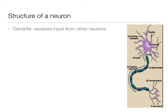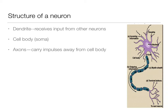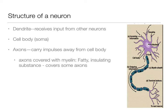The dendrite receives input from other neurons — so the information is going into the dendrites. Then we go into the cell body or the soma, which is where we have the nucleus as well. The axons carry the impulses away from the cell body. Those axons can be covered with myelin, which is a fatty insulating substance made up of those glial cells. It covers some axons and increases the speed of information transmission down the axon.